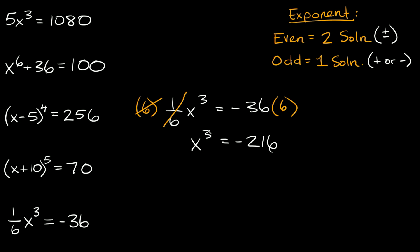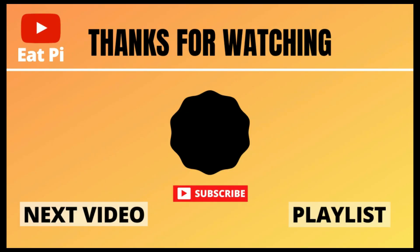To get rid of the cubed exponent we'll take the cube root of both sides. Those cancel out so we get x is equal to the cube root of negative 216, which is equal to negative 6. If you found the video helpful, definitely leave a thumbs up, and if you have any questions or want to see other examples, let me know in the comments below.